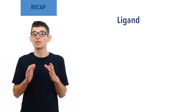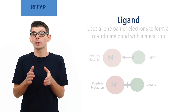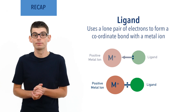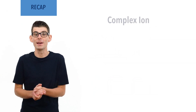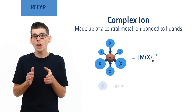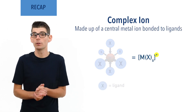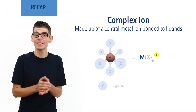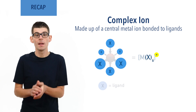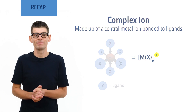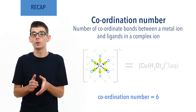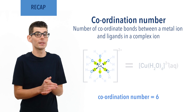Ligands are species that use a lone pair of electrons to form a coordinate bond to a central metal ion, forming a complex ion. Complex ions are made up of a central metal ion coordinately bonded to ligands. The overall charge of a complex ion is determined by the charge of the metal ion and the charges of the ligands bonded to it. Their formulas are written in square brackets. The coordination number refers to the number of coordinate bonds to the central metal ion.